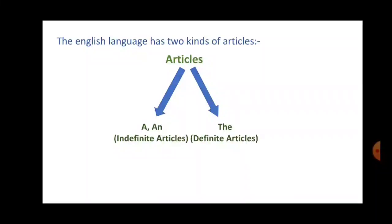Now as you know, the English language has two kinds of articles. The first one is indefinite articles, which means a and an. And the second one is definite article, that is the.